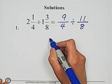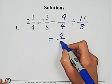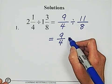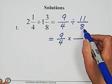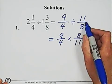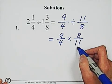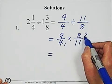And converting the division process to multiplication process by changing the sign, division to multiplication, and invert the second fraction. 11 over 8 becomes 8 over 11. Then reduce it, 1, 2.